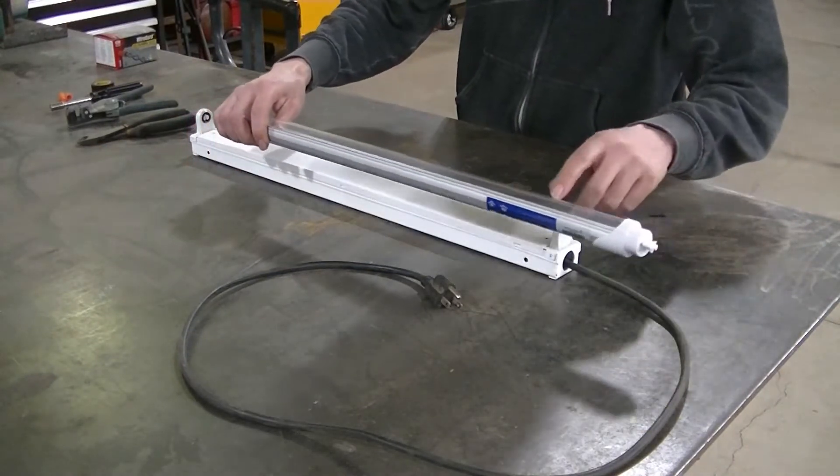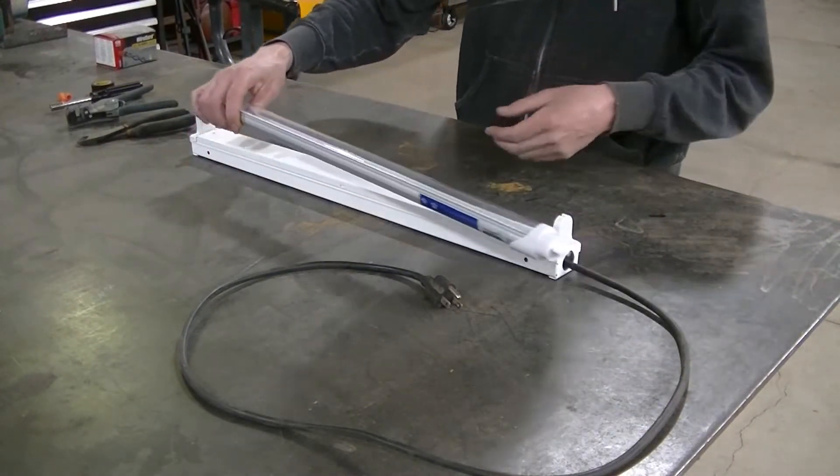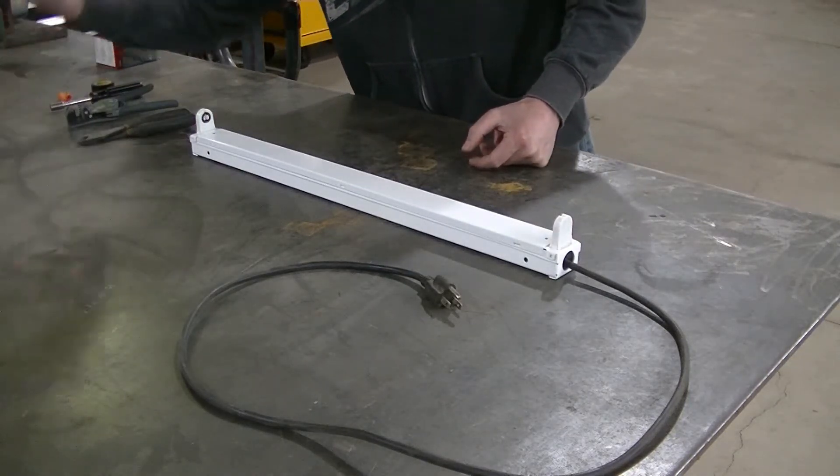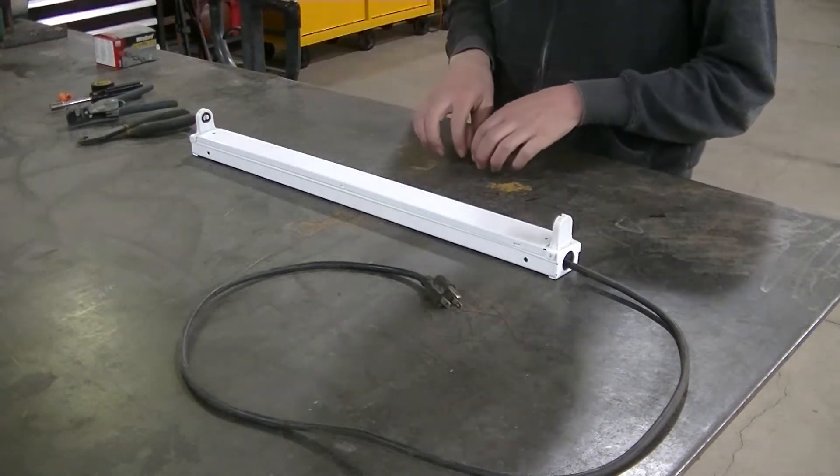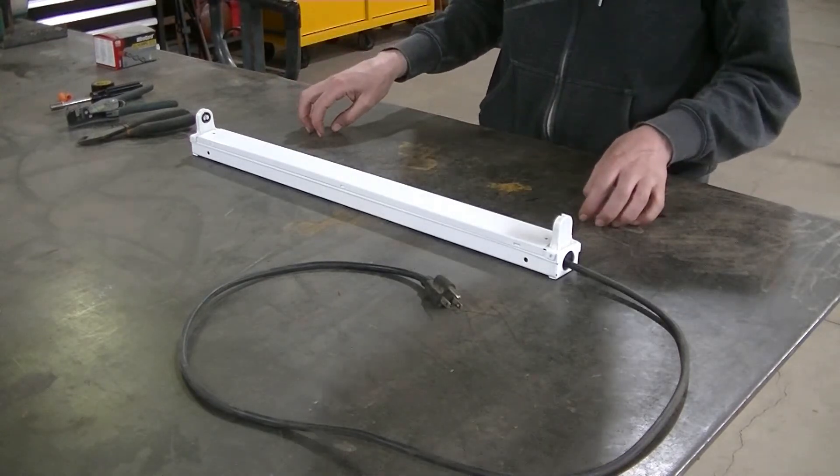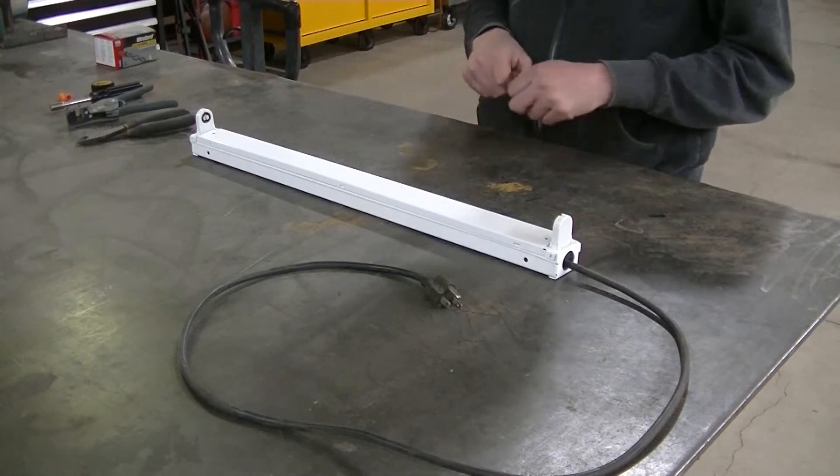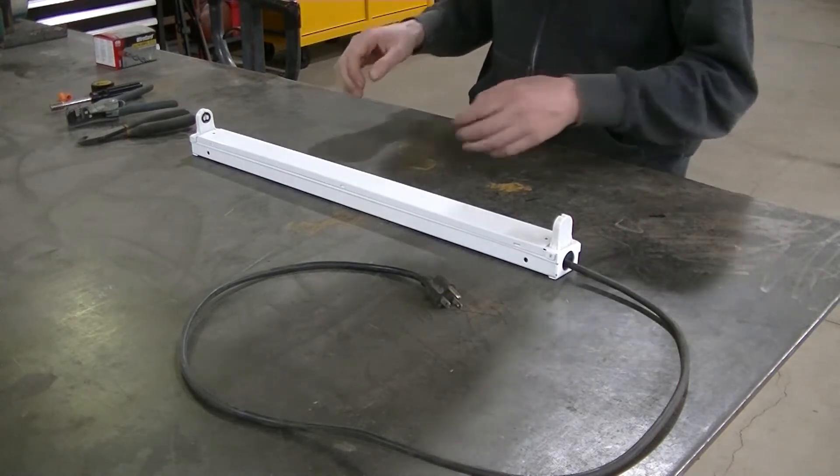You can get these in frosted as well as different Kelvin ratings, different color temperatures. But that's the one I like. The 5000K has a really nice crisp white light. The clear lens I think lets out maximum light. But if you like frosted, they have them too.